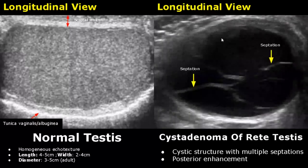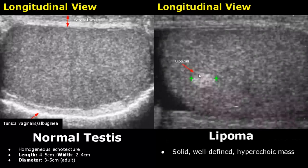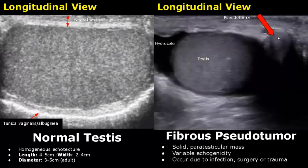Cystadenoma of the rete testis is a rare tumor. The cystic structure will contain multiple septations with posterior acoustic enhancement. Here is another image of cystadenoma of the rete testis — a cystic structure with multiple septations. A lipoma in a testis will appear as a well-defined hyperechoic mass without any posterior acoustic shadowing. Fibrous pseudotumor is found outside the testis as a solid mass with variable echogenicity. We can distinguish it from tumors by the cause: it occurs due to infection, surgery, or trauma.